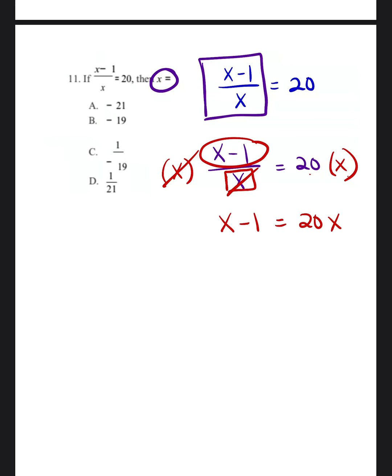So what I'm going to do here is I'm going to go ahead and I can subtract 1x from both sides. These x's cancel each other out and I'm left with negative 1 is equal to 20x minus 1x, which is equal to 19x.